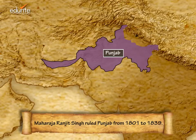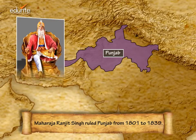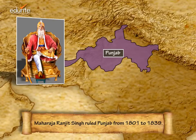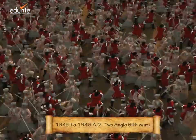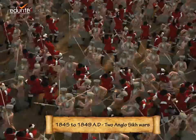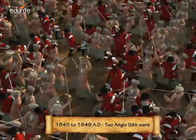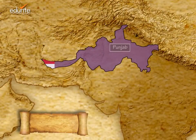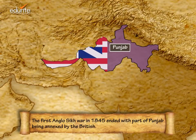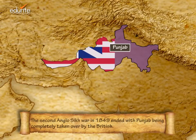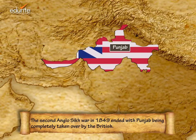Only Punjab could not be captured by the British Army for as long as Maharaja Ranjit Singh ruled. After his death in 1839, two wars were fought between the Punjab and British armies. The first war ended with part of Punjab being annexed by the British, and the second war in 1849 resulted in Punjab being completely taken over by the British.